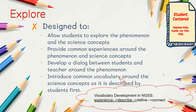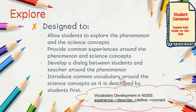The next portion of the lesson is the explore portion. This portion is designed to allow students to explore the phenomenon and the science concepts. It's going to provide common experiences for students around the phenomenon and allow them to gather information and data. The students are going to develop a dialogue with the teacher around the phenomenon, and common vocabulary is going to start to be introduced at this stage. The key about vocabulary development in NGSS is that students have to have an experience to hang the vocabulary on. In this explore phase, before we introduce concept vocabulary, we want students describing in their language — in kid-friendly language — the experiences they're having. Once they have a solid description of the experience, we're going to give them the specific vocabulary words that connect to that learning they already have.